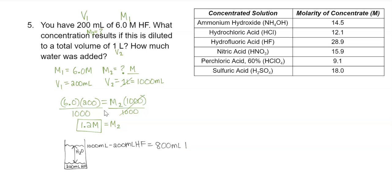We can write that answer down: 800 milliliters of H2O. Our final answers: the concentration that results is 1.2 molar, and the amount of water added was 800 milliliters of water.